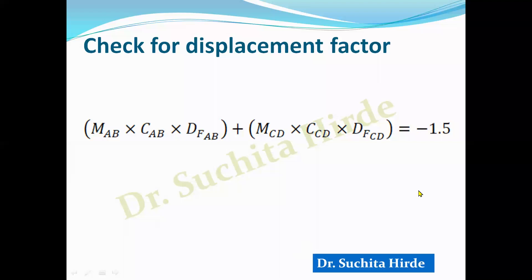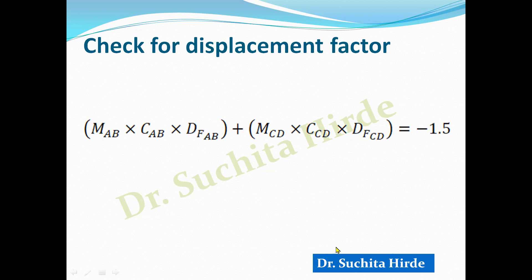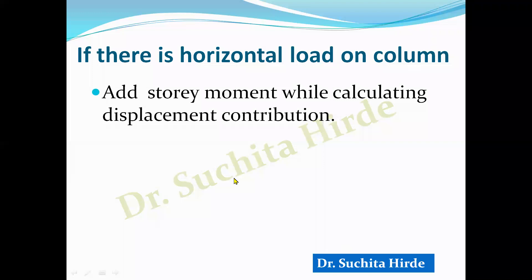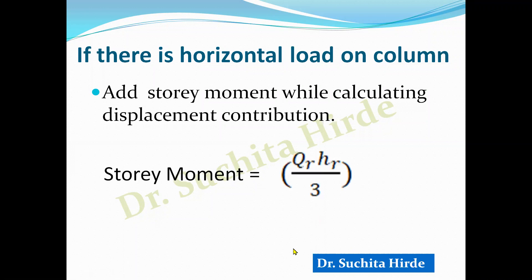There are two types of sway problems in Kani's method: one where the frame is subjected to only vertical loads, and a second where the frame is subjected to a horizontal load in addition to vertical load. If there is a horizontal load on the column, we have to calculate the story moment. The story moment formula is: QR × HR / 3.